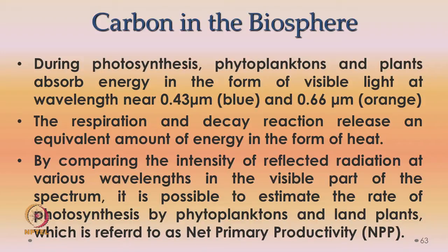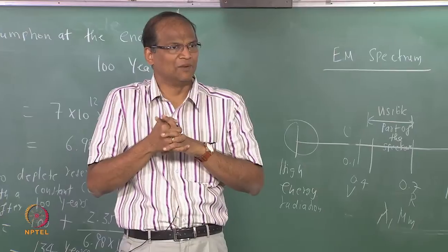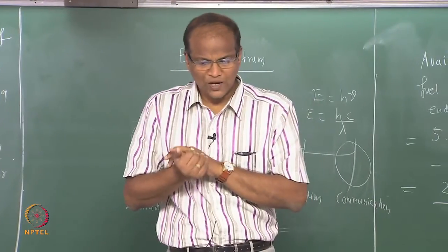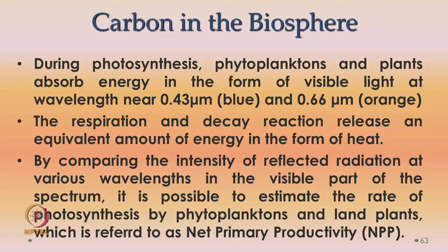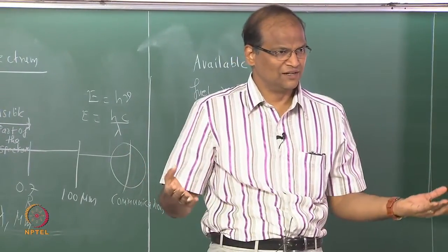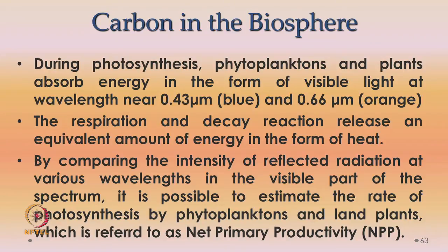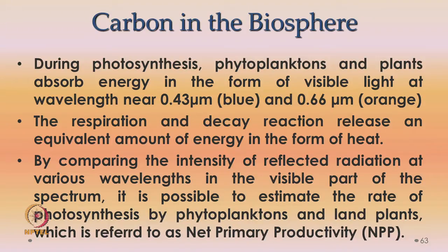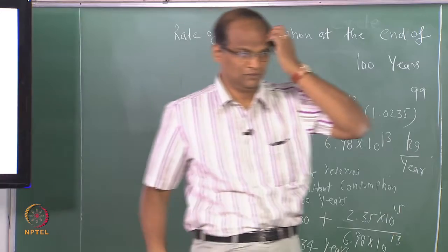How do we measure globally the amount of photosynthesis taking place? This can be done by mapping with the help of satellites — this is called remote sensing. You can compare the intensity of reflected radiation at various wavelengths in the visible part of the spectrum. Whatever is coming from Saudi Arabia will be quite different from whatever is coming from the Amazon. By looking at this reflected radiation in the visible part of the spectrum, it is possible to estimate photosynthesis — the net primary productivity (NPP) of the earth.